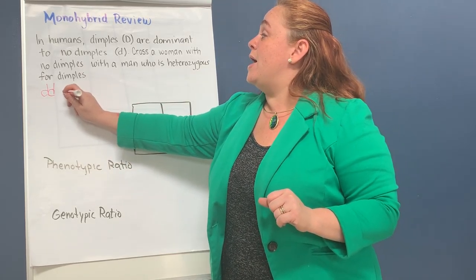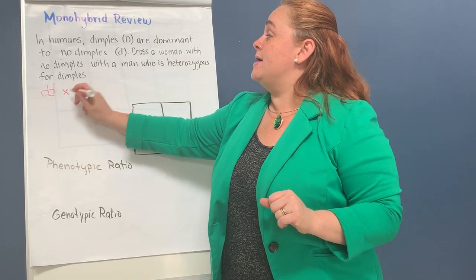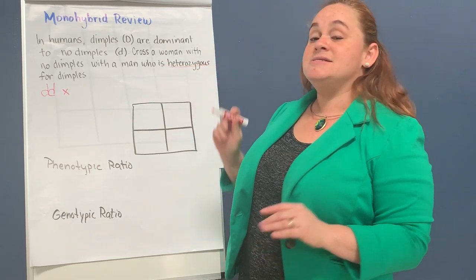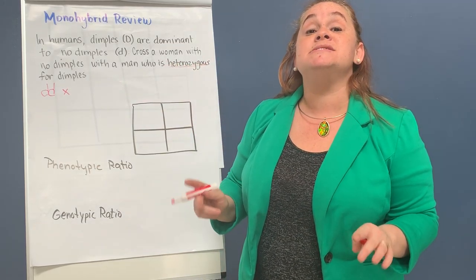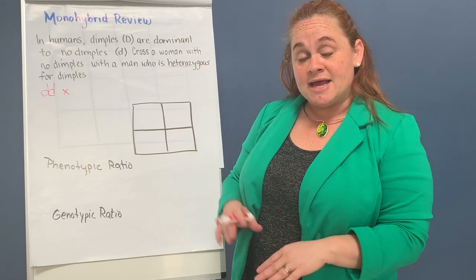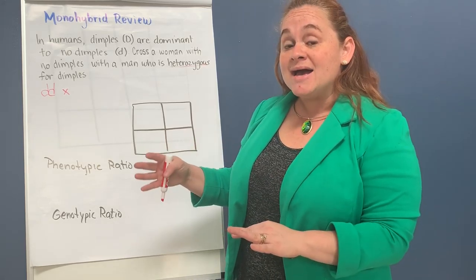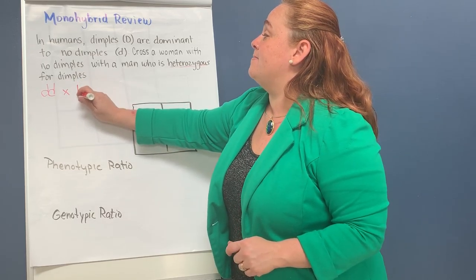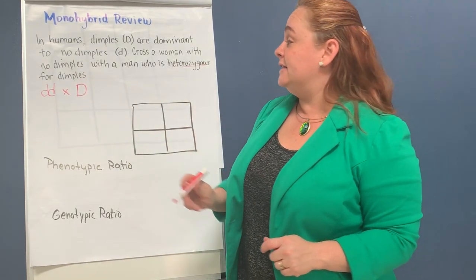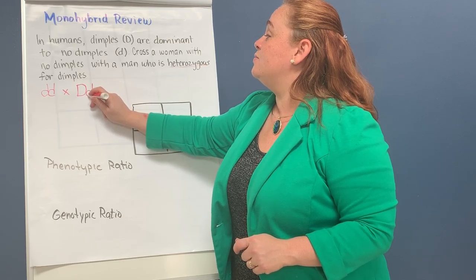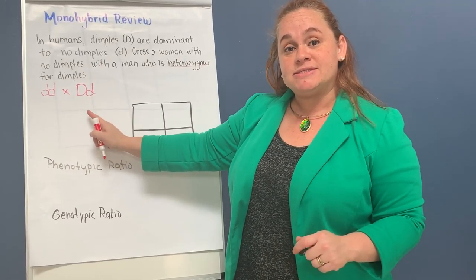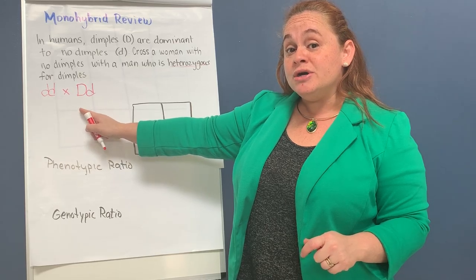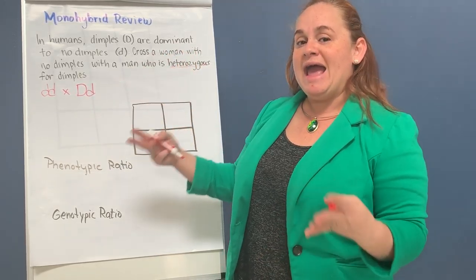Now let's find out what genotype the man has. The man is heterozygous for dimples. Heterozygous, if you remember, is the one that is mixed — we have the uppercase and the lowercase, where the uppercase masks completely and dominates completely, but he is still a carrier for the trait. So the man has a dominant allele and a recessive allele, which makes him heterozygous. He can code for no dimples, but he himself has dimples.